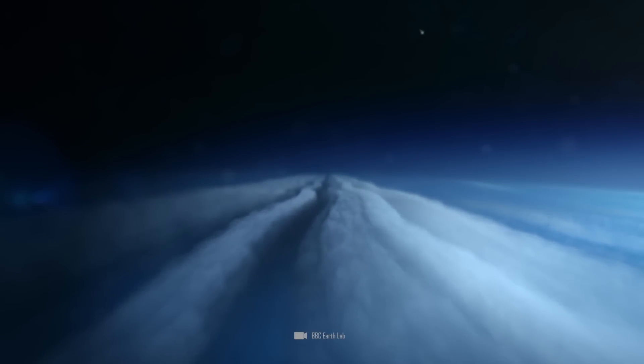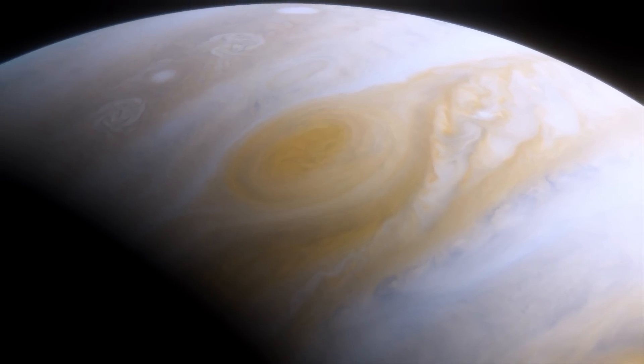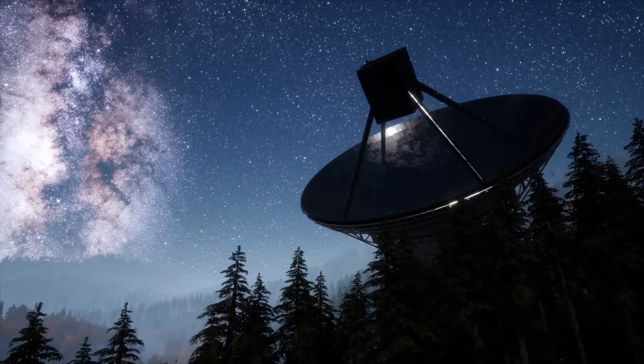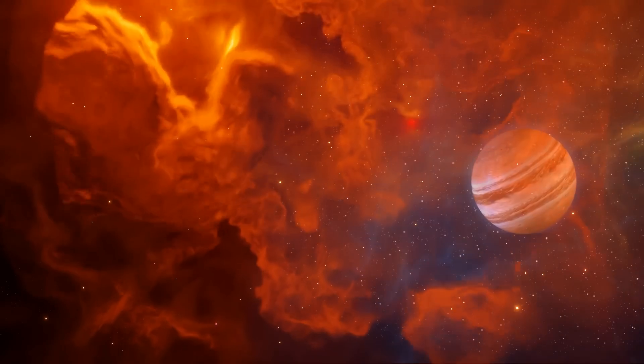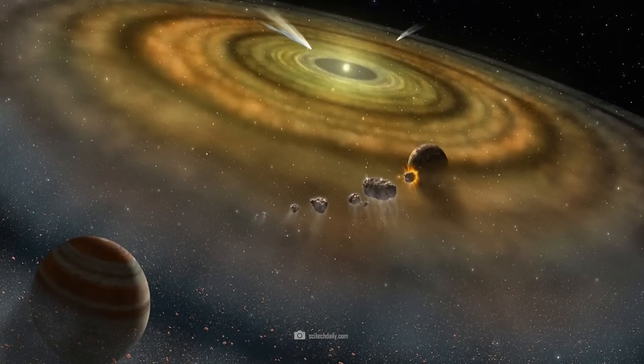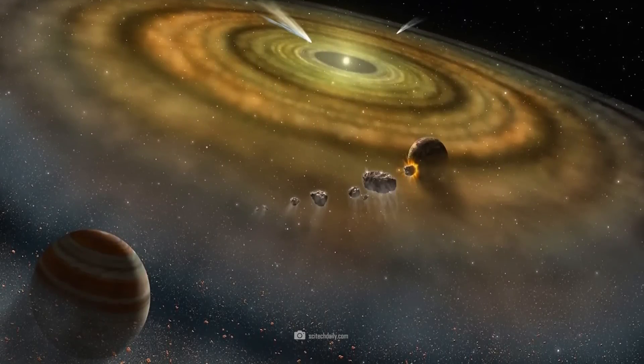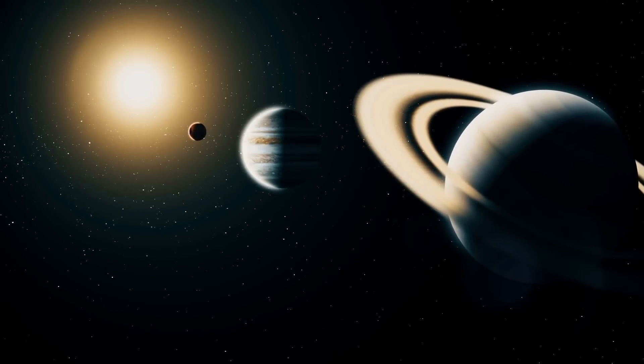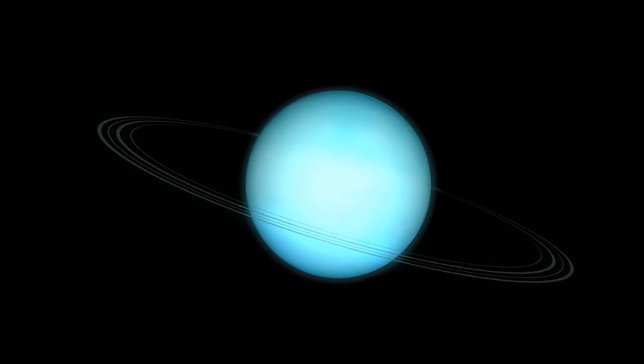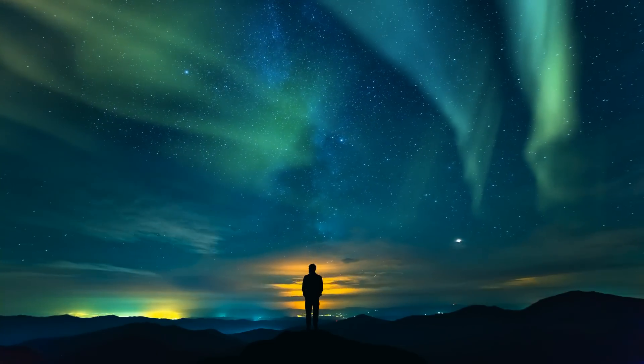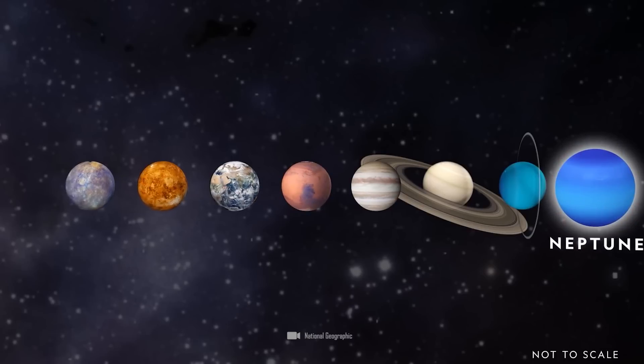For a long time, Neptune was thought to have a similar structure to Jupiter, but at the same time, Jupiter is 318 times more massive than Earth, and thus, 18 times heavier than Neptune. Initially, astronomers saw nothing unusual about it. Jupiter formed in the middle part of the protoplanetary disk, which was rich in light gases, and the farther away from the Sun, the less material is required. Accordingly, Saturn weighs as much as 95 Earths, and Uranus weighs as much as 14.5 Earths.